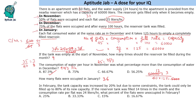The next question is about February. The tank capacity was increased by 20%, but due to some constraints the tank could only be filled up to 80% of its new capacity. Increasing by 20% makes it 120%, and filling only up to 80% of that gives 96% of the original capacity. So the effective capacity = 60,000 × 96% = 57,600 liters. The reservoir was filled 14 times in the month and the consumption rate per flat was 24 liters per hour.